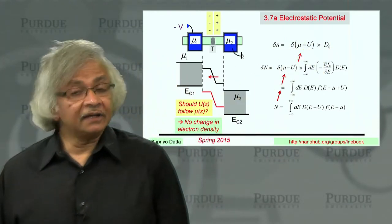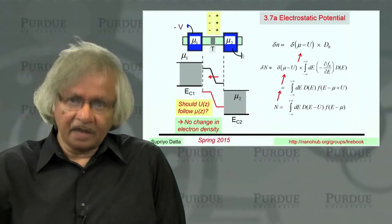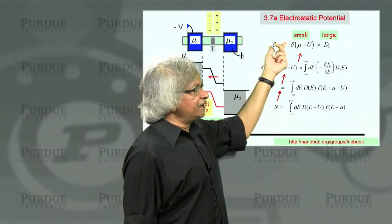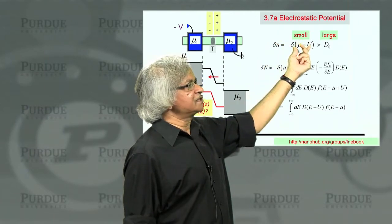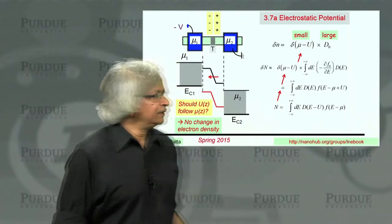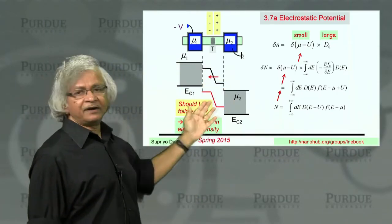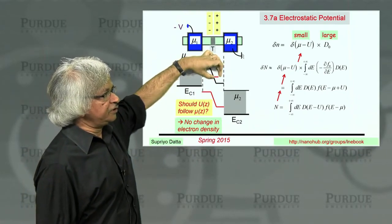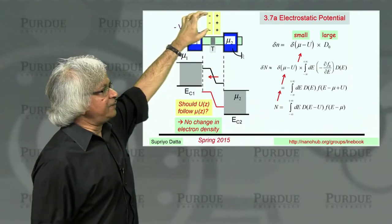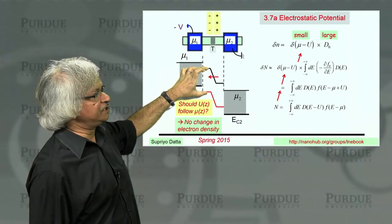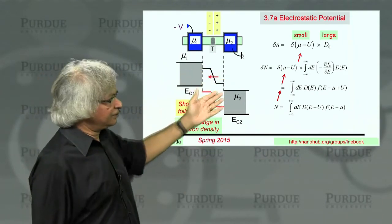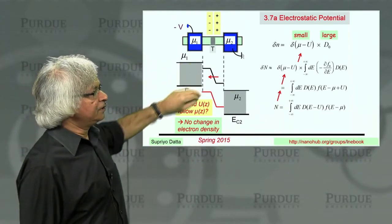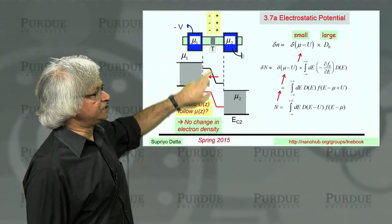If you have a very conductive medium with a high density of states — large D0 — then for a given electron density change, you need only a very small change in (mu minus u). So if the medium is very conductive, all the extra electrons needed to create the electric field can be accommodated with only a slight change in (mu minus u), slight enough that on this scale you wouldn't even notice it. In a very conductive medium, the change in u will more or less mirror the change in mu.